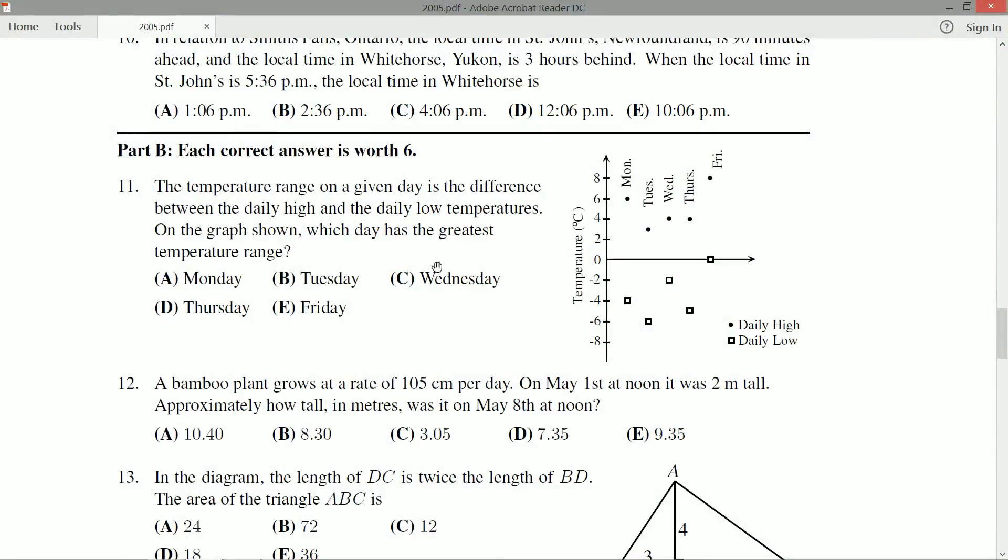So part of this question is can we read and interpret this graph here. We have the filled in dot, the bullet here is the daily high, so there they are up top, and we have the daily lows.